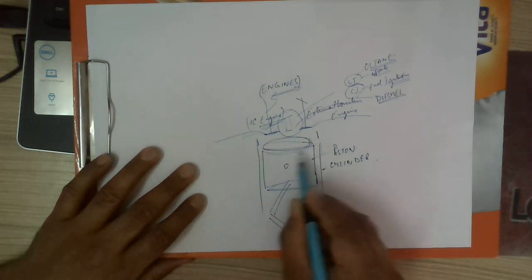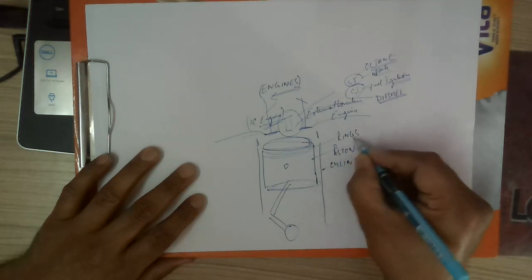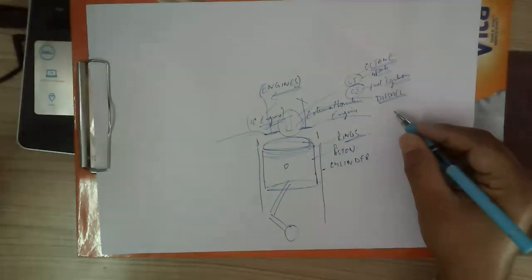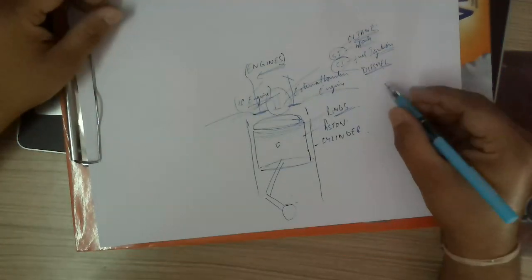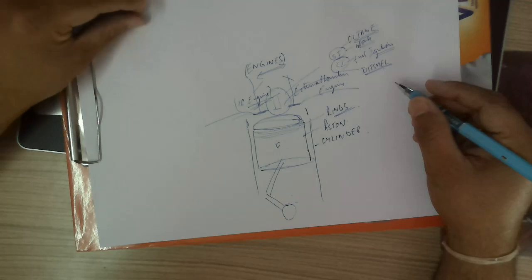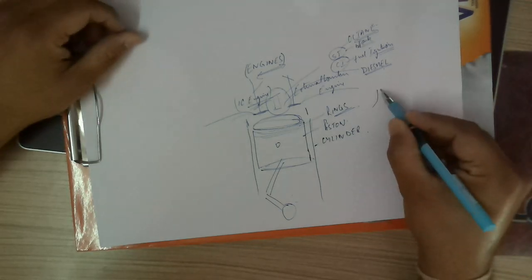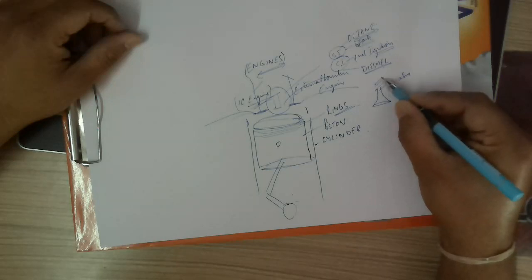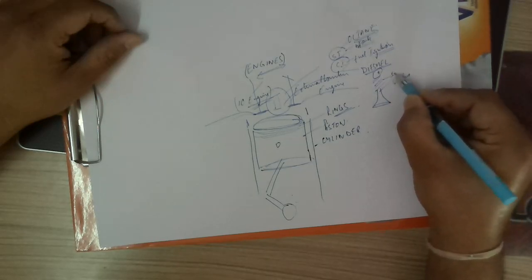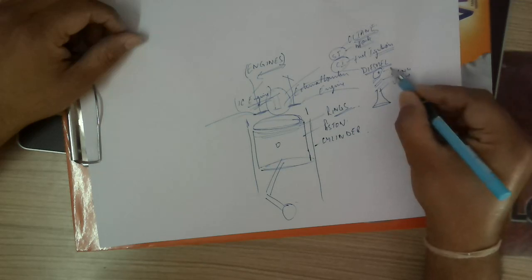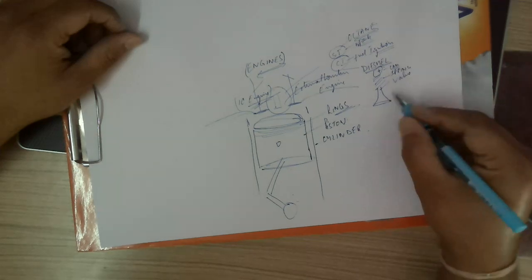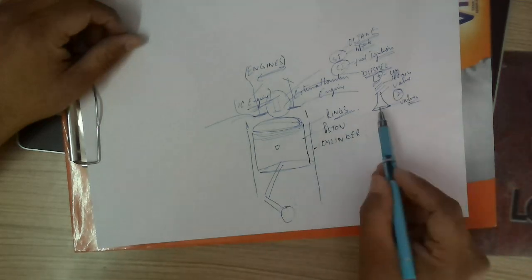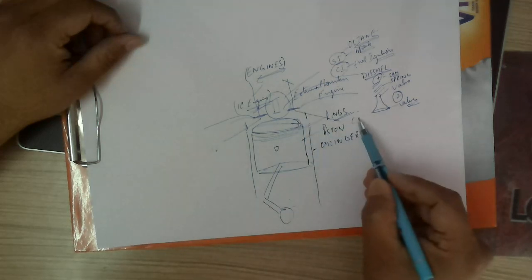The piston consists of piston rings. Now regarding the working principle of internal combustion engines: the valves consist of a cam arrangement, springs, a cap, and the valves themselves. We have two types of valves — the inlet valve and the exhaust valve.